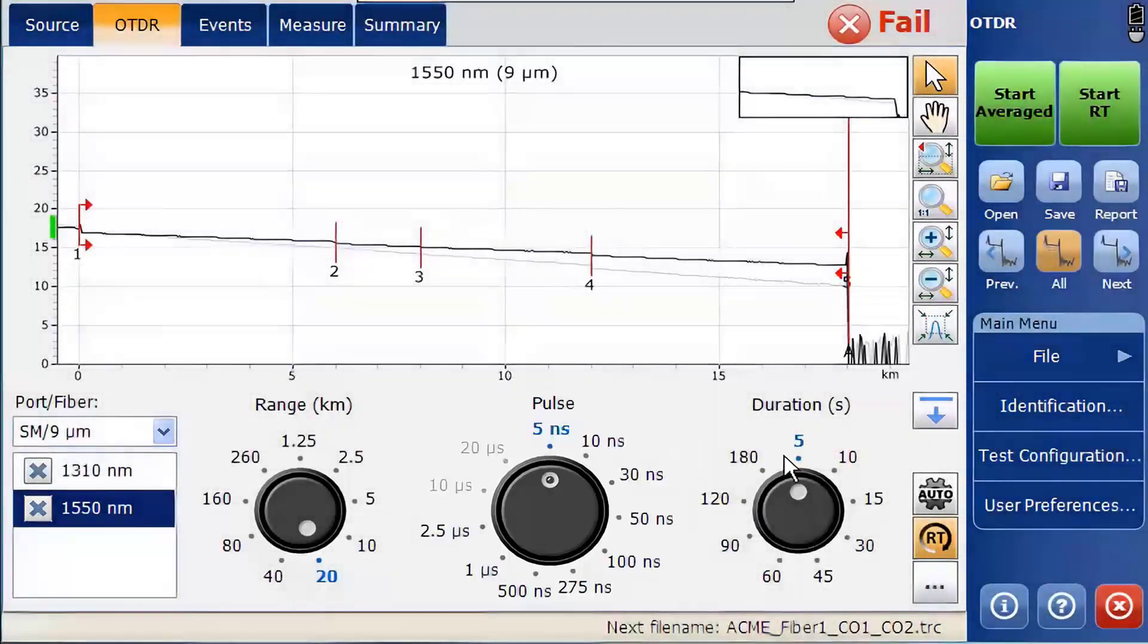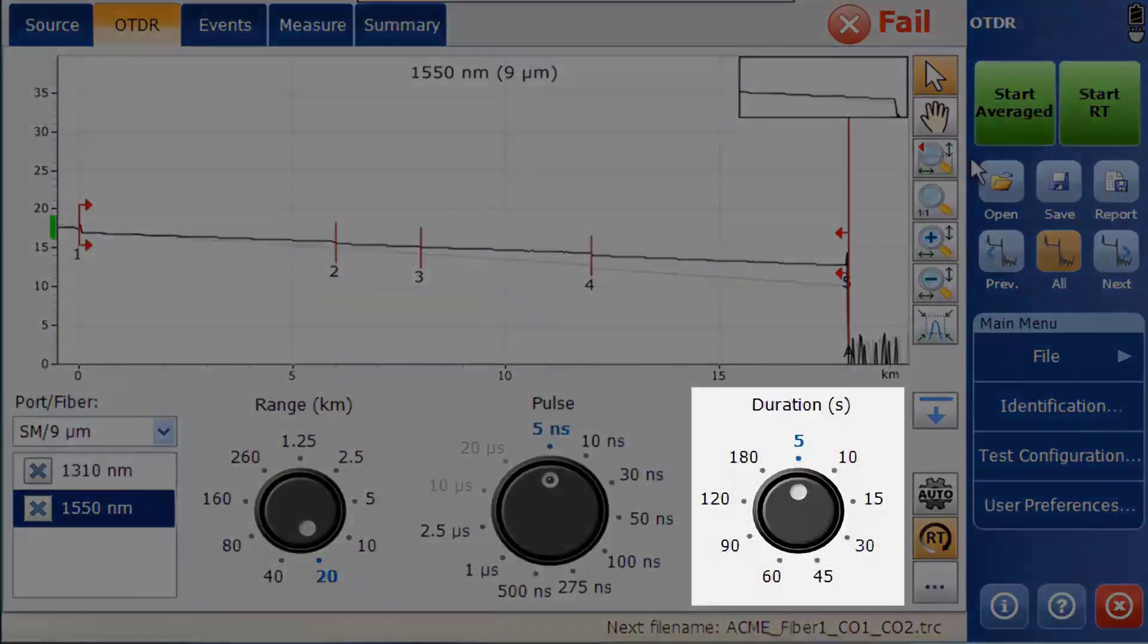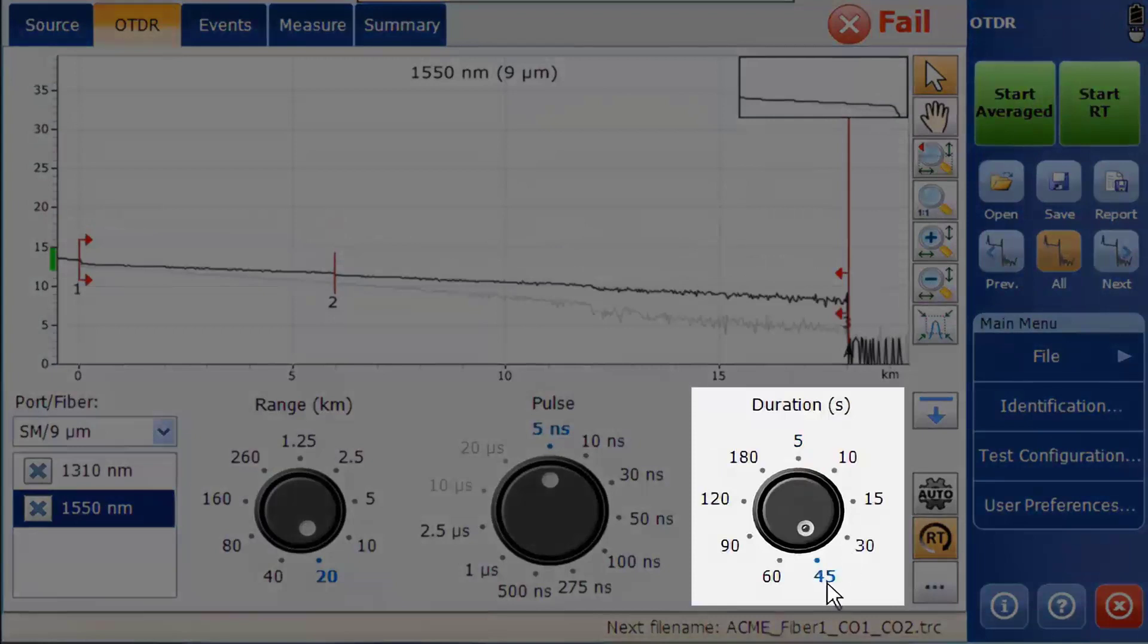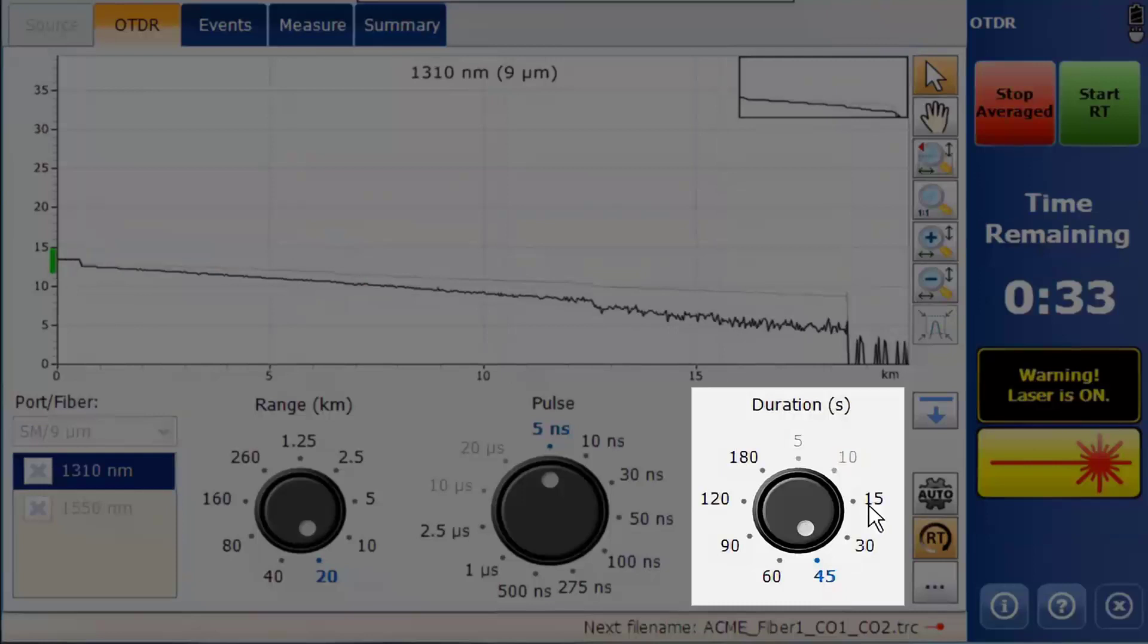The short duration allows you to improve efficiency by reducing testing time per fiber. If it is necessary to have a high resolution but also test long distances, then the duration must be increased to improve the averaging and reduce the signal noise.